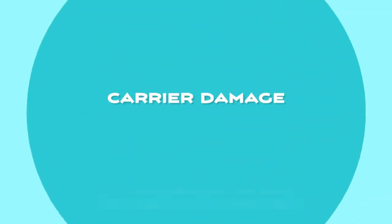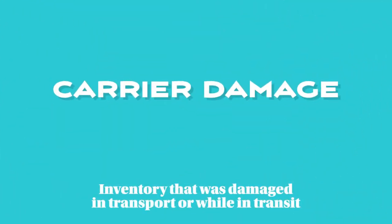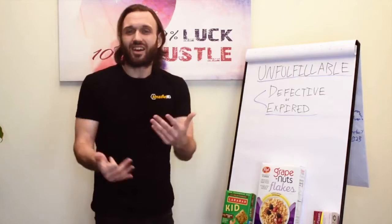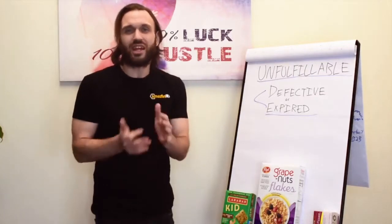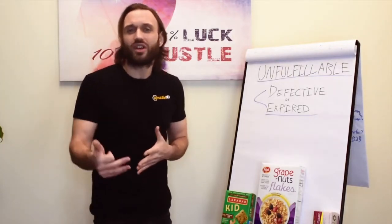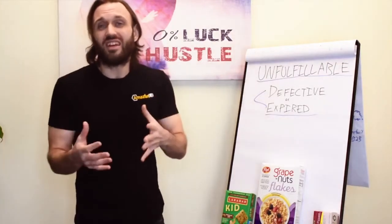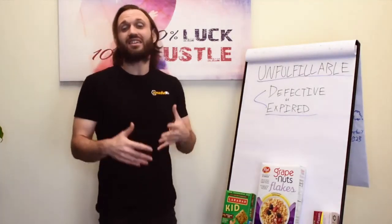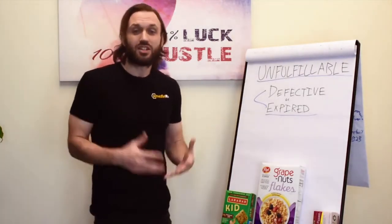Then we have carrier damage, which means the product was damaged in transport — either in transit to a customer or during the process of a customer return. For example, if a customer returns something saying it was in great condition and they just no longer needed it, but Amazon receives the product damaged, that's considered carrier damage.